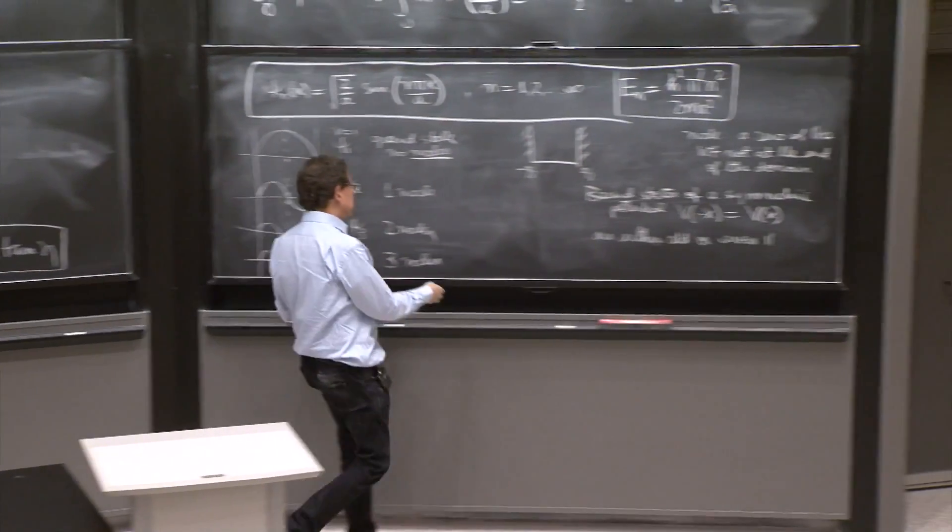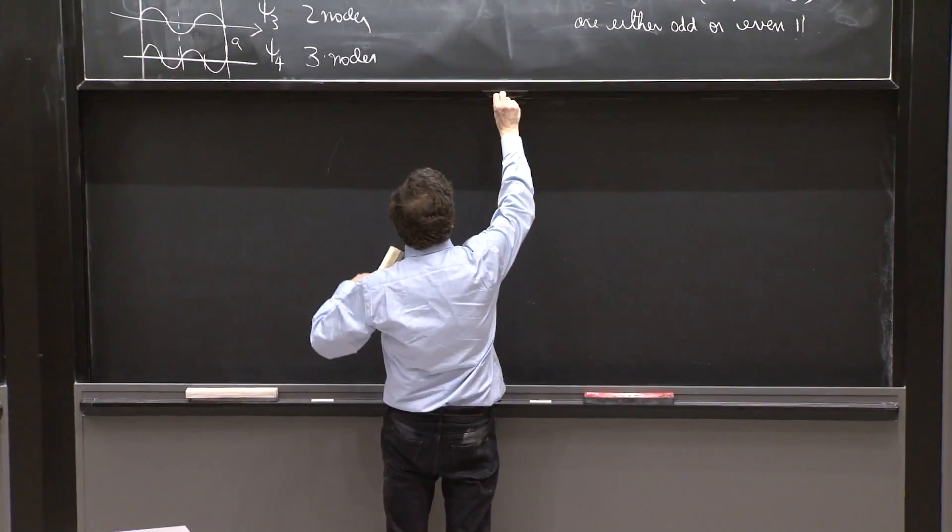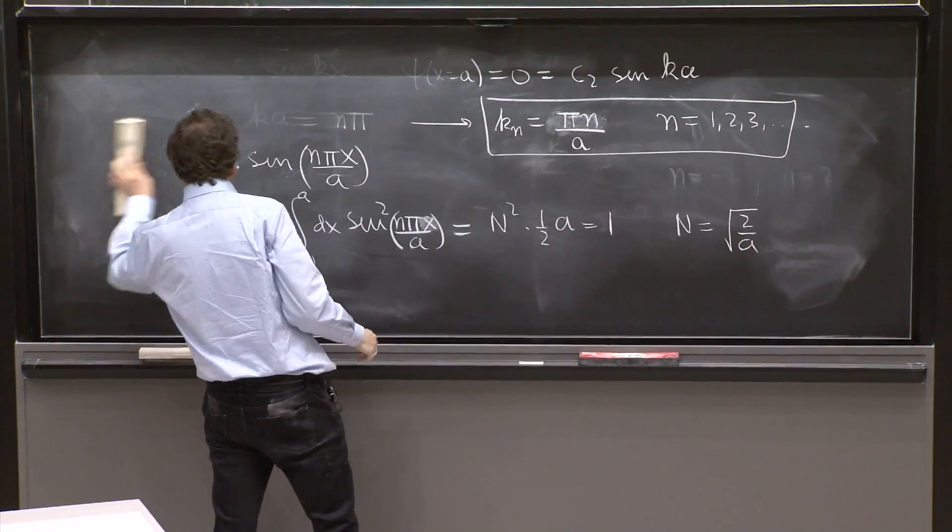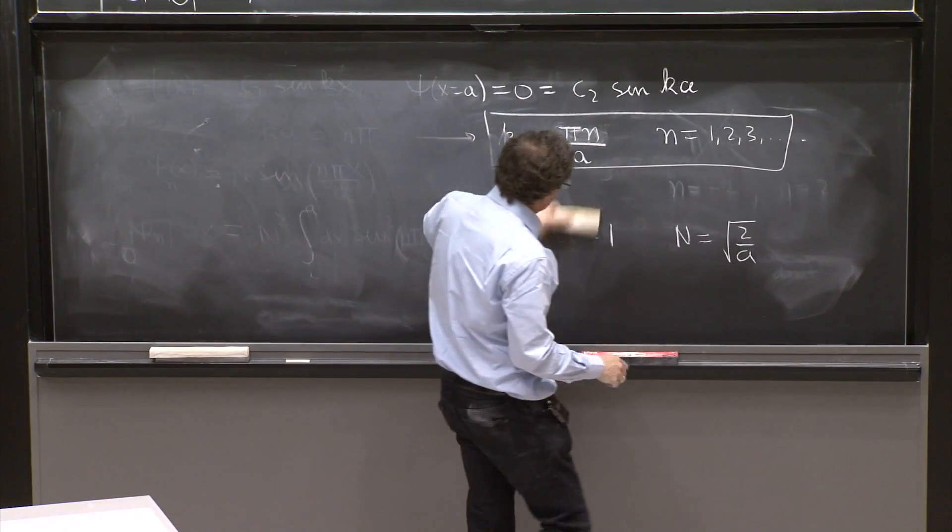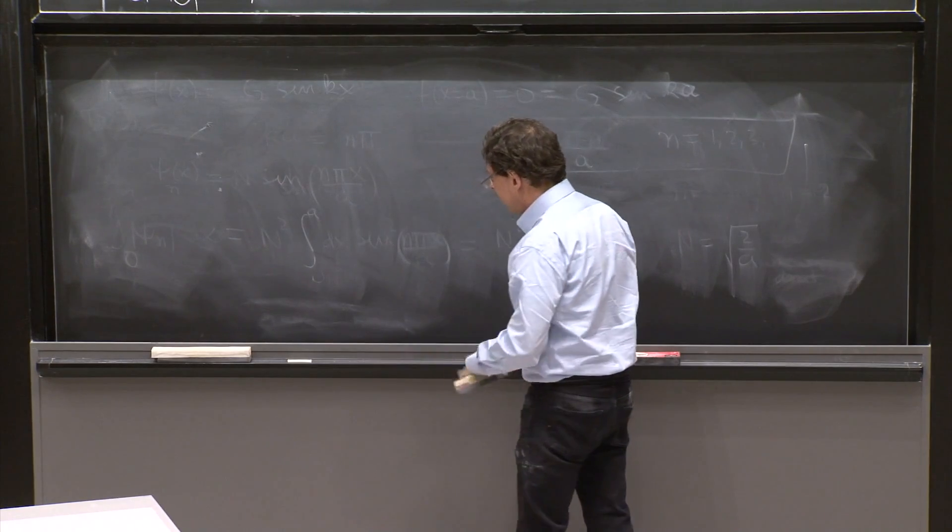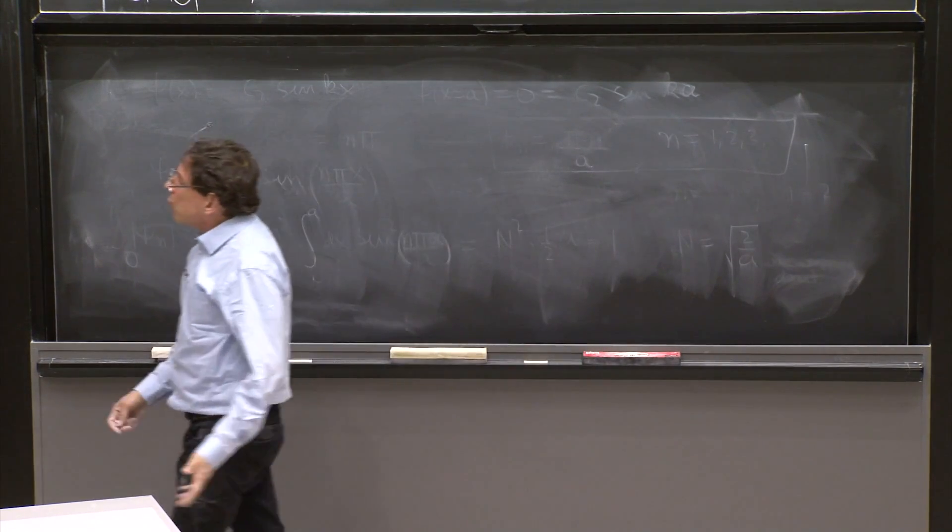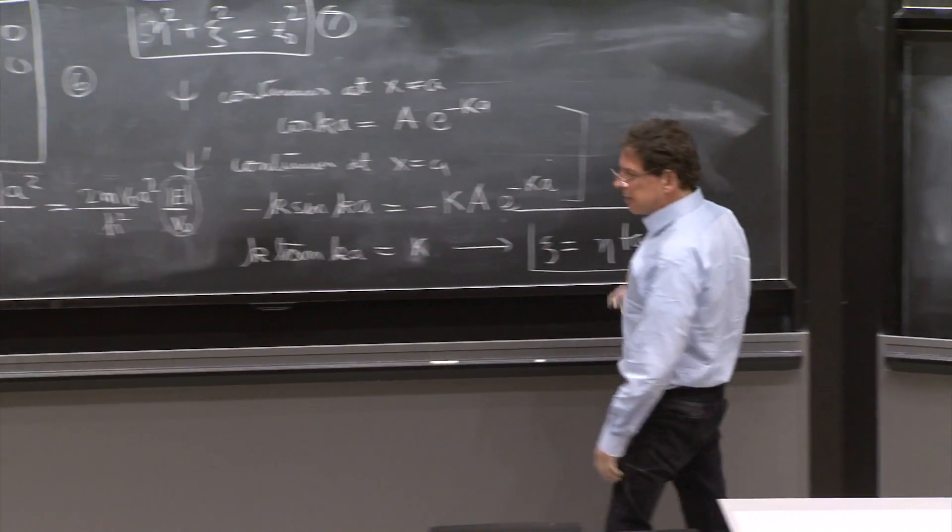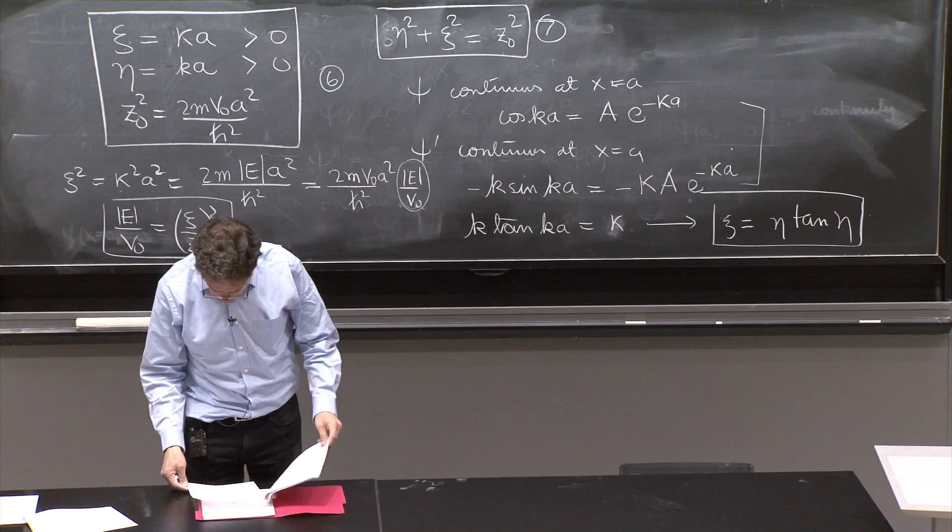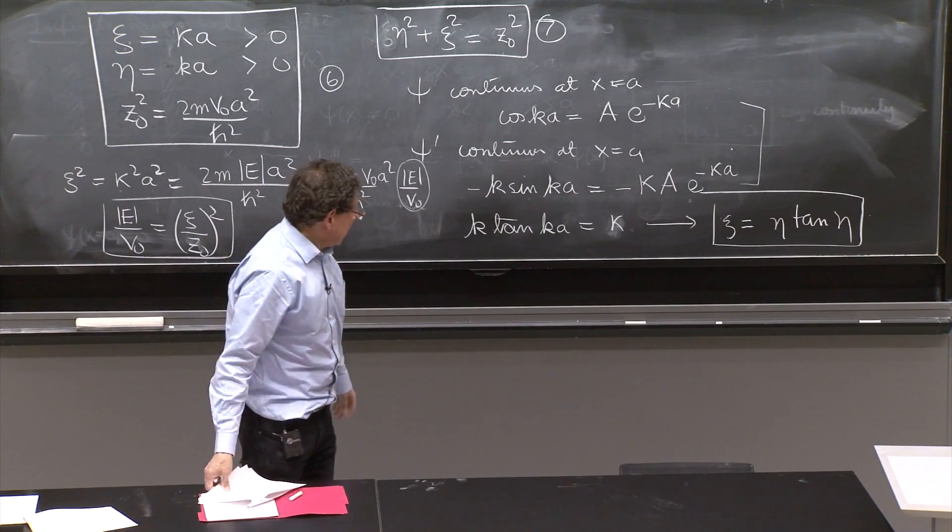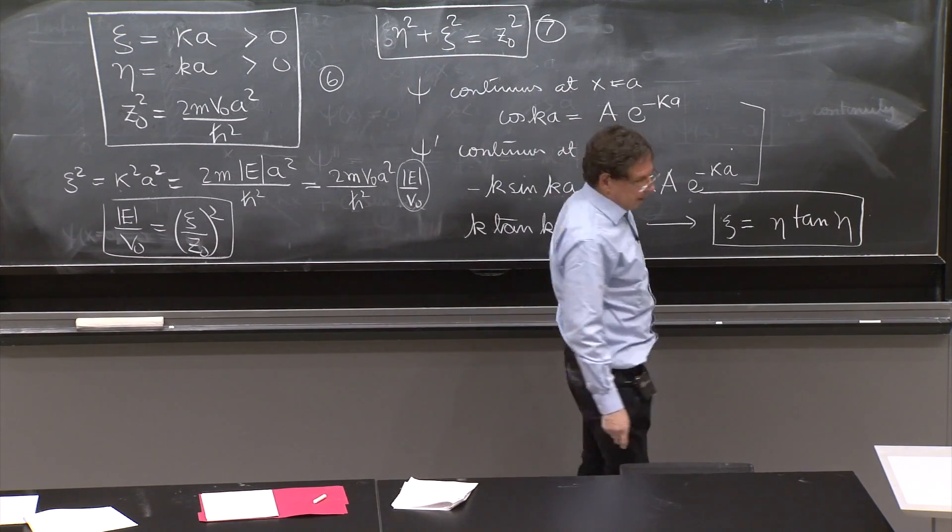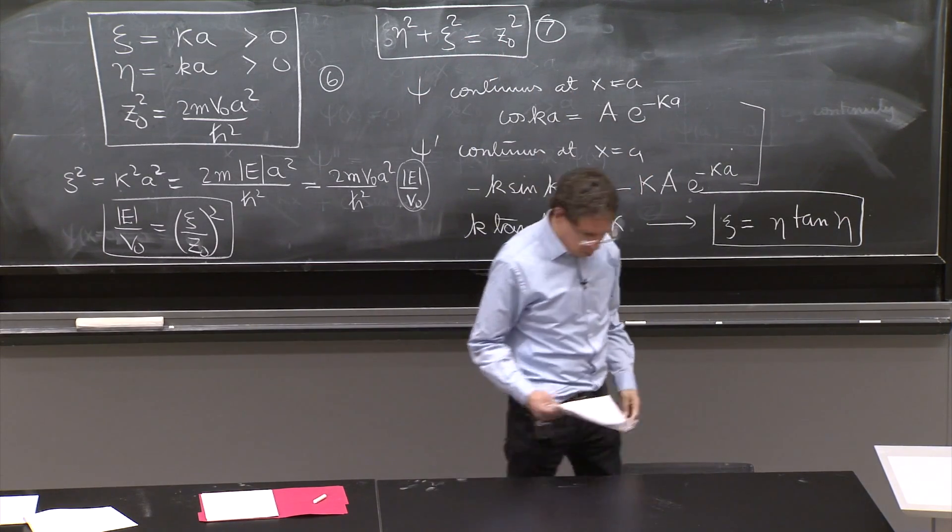So punchline for solutions. So what do we have? We have two equations. This equation, maybe, should be given a number. Psi equal eta tan eta, and eta and psi squared giving you z squared. So how do we solve it? We solve it graphically.